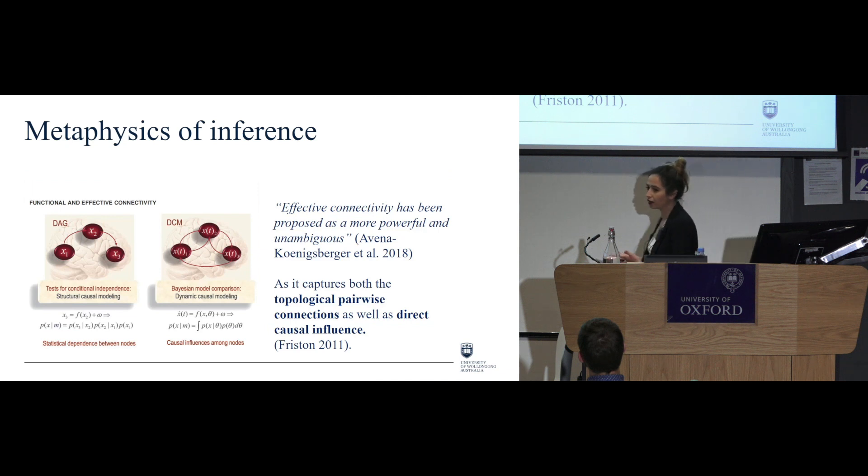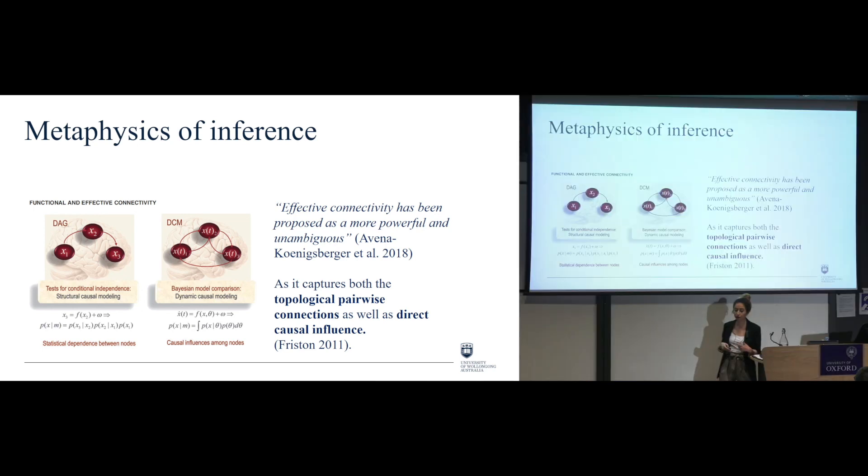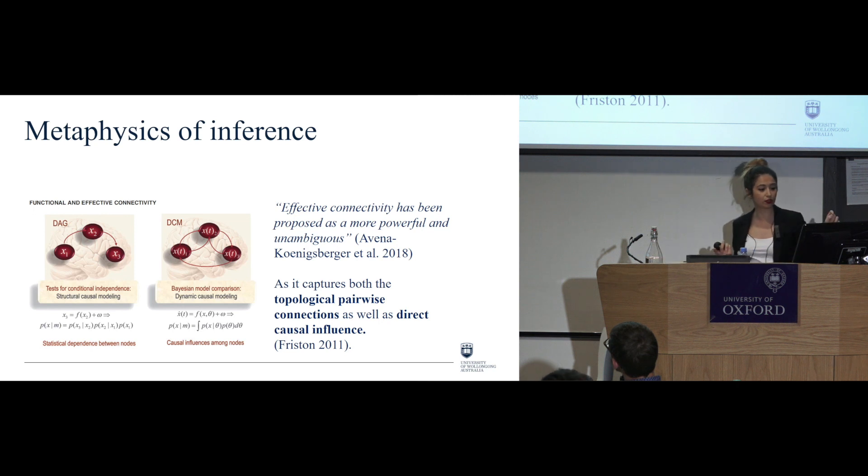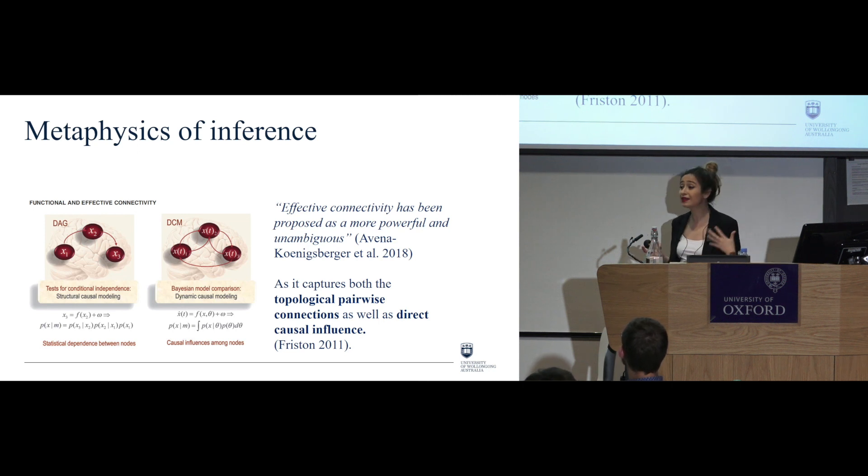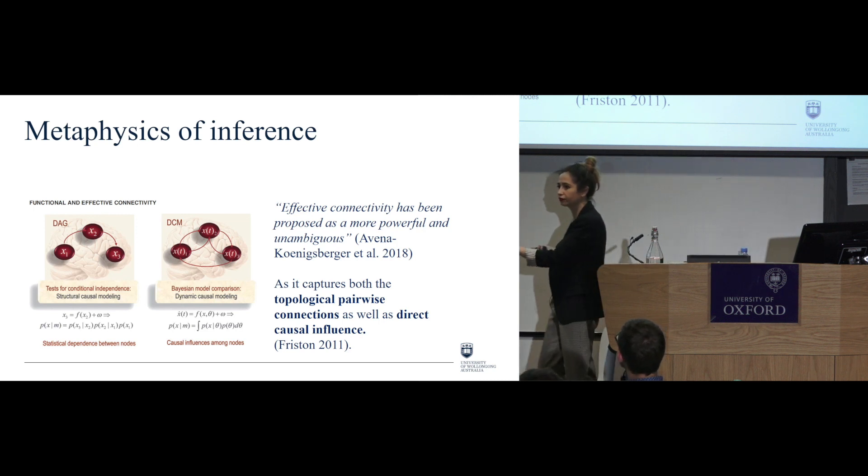Okay. Good. So, some people think and come forward to say that, well, effective connectivity is more powerful and less ambiguous. Okay. And this would be the idea also followed by Friston in 2011, when it tells us, well, this is the case, because it captures both the topological pairwise connections, as well as direct causal influences. And we can see that in these graphs, in which on the first one, the structural causal modeling, we can look at the topological pairwise connections, and on the second one with the dynamic causal model modeling, we can see that, but we can also see the direct causal influence. So this is what motivates me to now focus on the effective connectivity, and how we can explain that by looking at the oculomotor system.